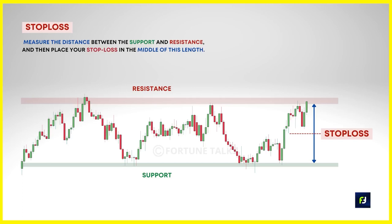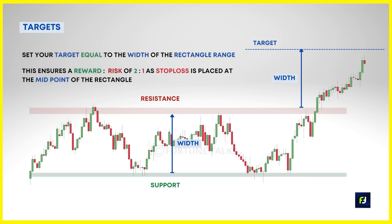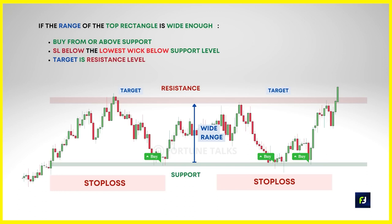For exits on rectangle patterns, the minimum target should equal the size or width of the pattern — the distance between support and resistance is placed on the chart from the breakout point. Since the stop loss is at the midpoint of the rectangle range, the target is twice the size of the stop loss, giving a reward-to-risk of 2:1 from the outset. You can also use a trailing stop loss method to ride the trend until it is exhausted. Additionally, traders can trade inside the rectangle by buying at support and selling at resistance if the width of the rectangle is large enough to provide a sufficient reward-to-risk ratio — usable as an intraday or swing strategy.